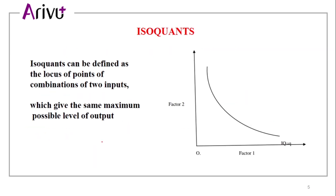What are isoquants? Isoquants can be defined as the locus of points of combination of two inputs which gives the maximum possible level of output. The two factor inputs — for example, labor and capital — are combined to achieve the maximum possible level of output. This locus of points is the isoquant.